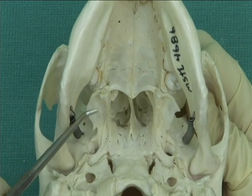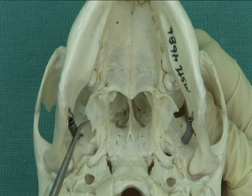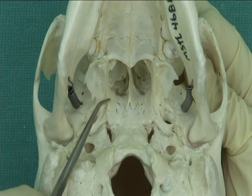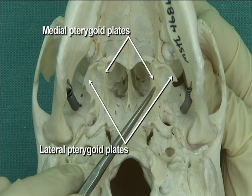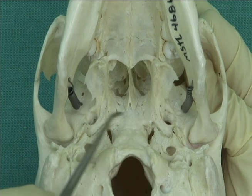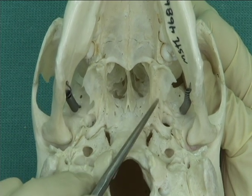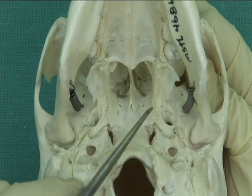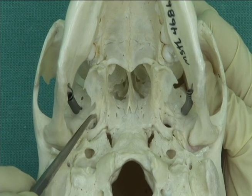Re-identify the lateral and medial pterygoid plates and pterygoid fossae of the sphenoid bone, which lie between the medial and lateral pterygoid plates.